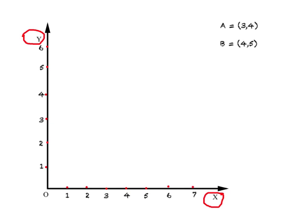Why are they called x and y? Simply by convention. What we do is draw these lines and join them, and wherever these two axes or lines meet, you have the point of origin. Then you divide each of these axes — the x and the y-axis — into parts.